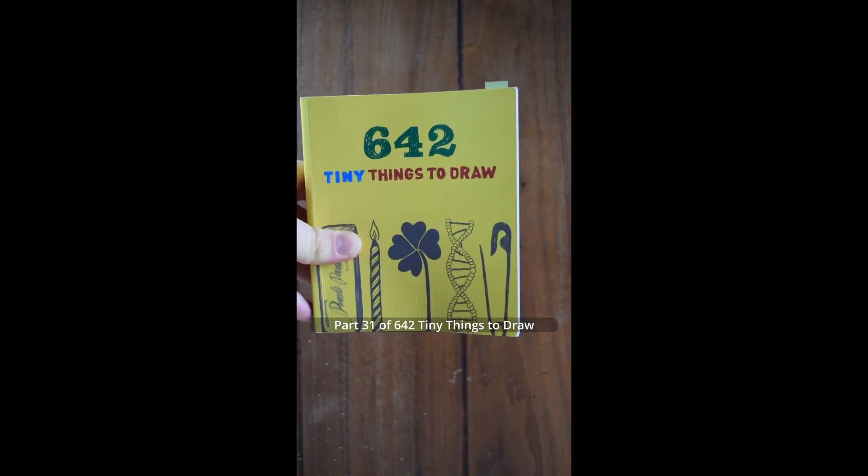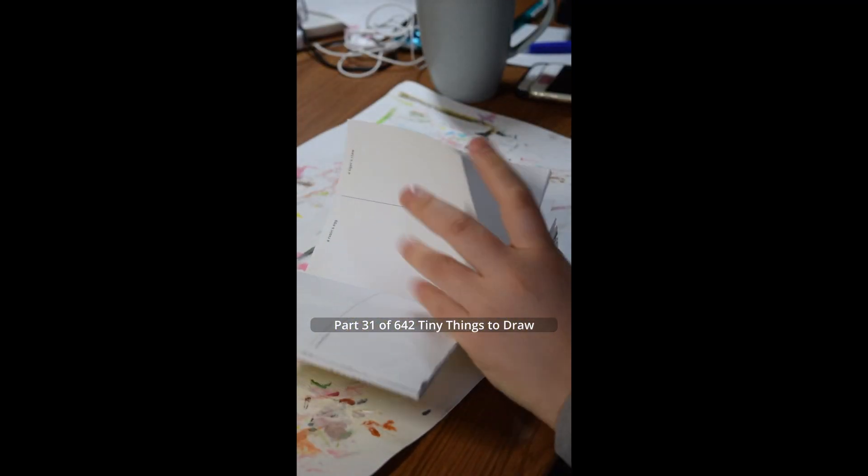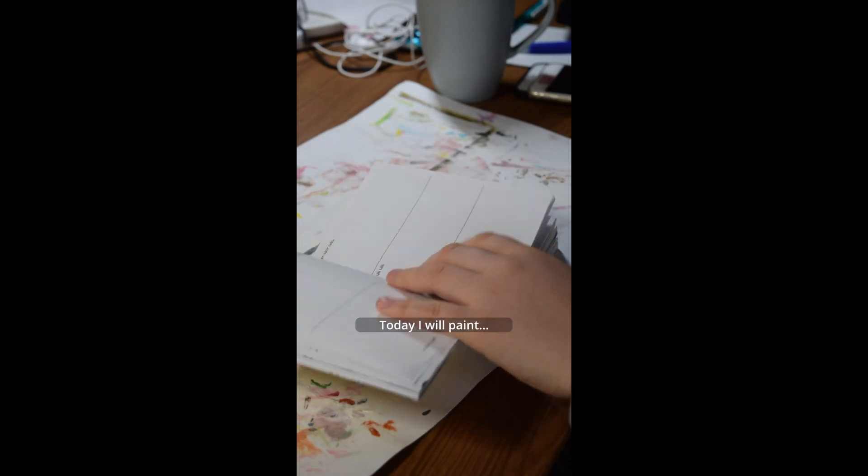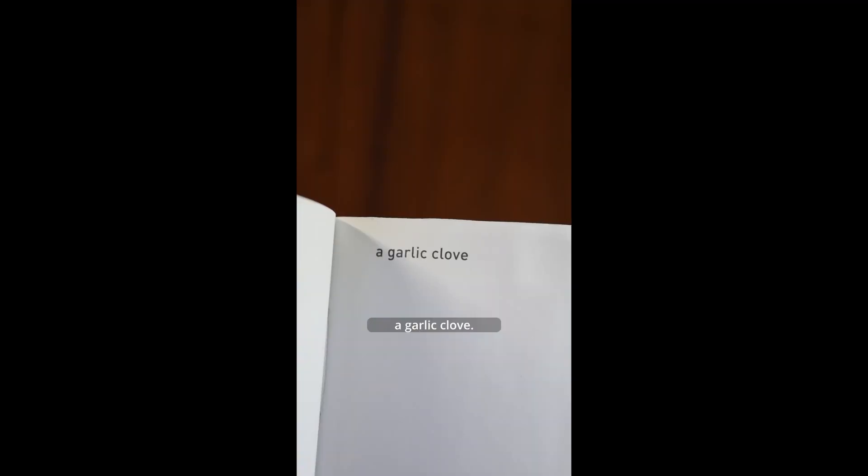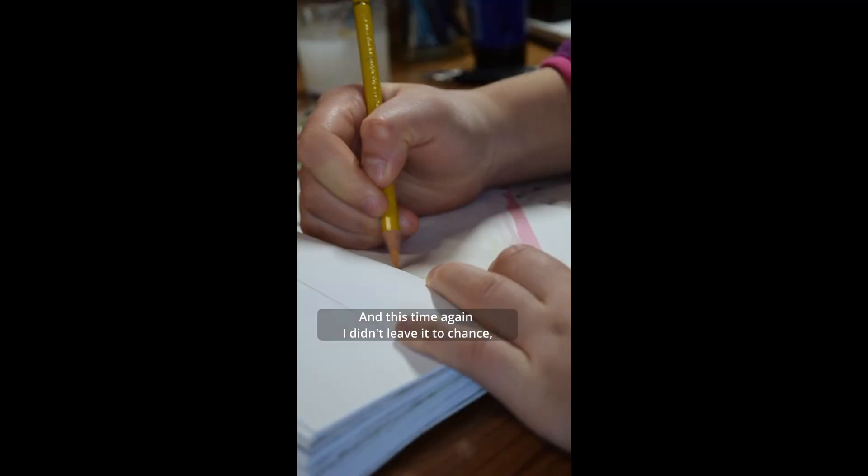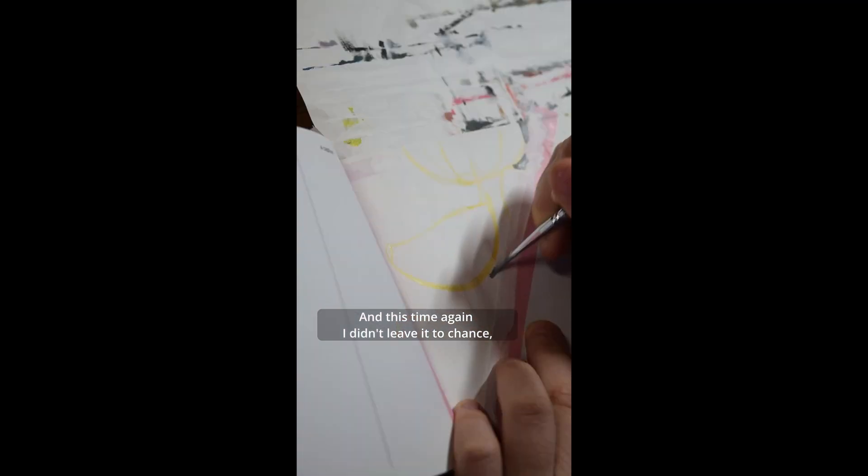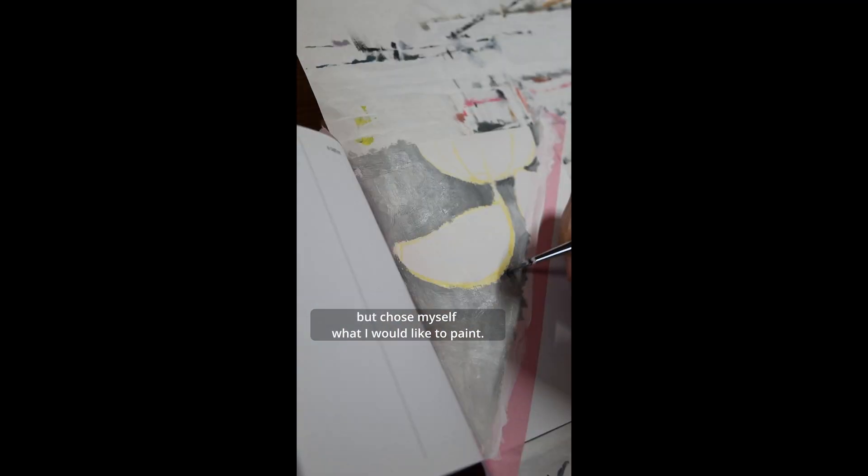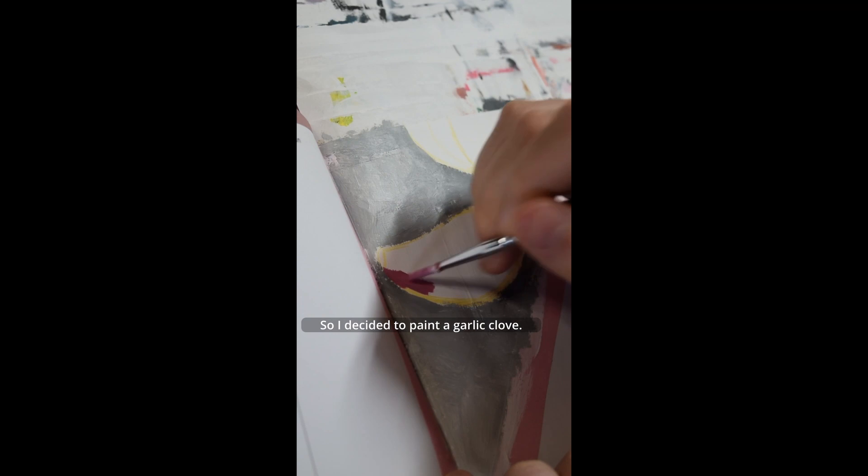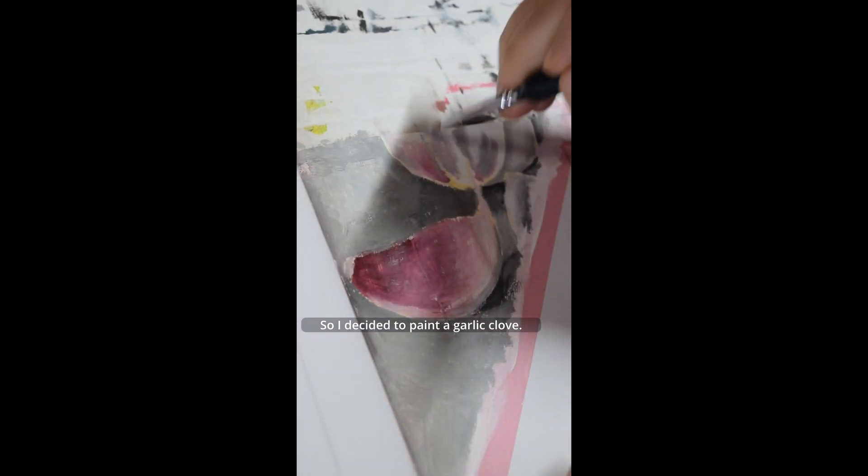Part 31 of 642 tiny things to draw. Today I will paint a garlic clove. And this time again, I didn't leave it to chance, but chose myself what I would like to paint. So I decided to paint a garlic clove.